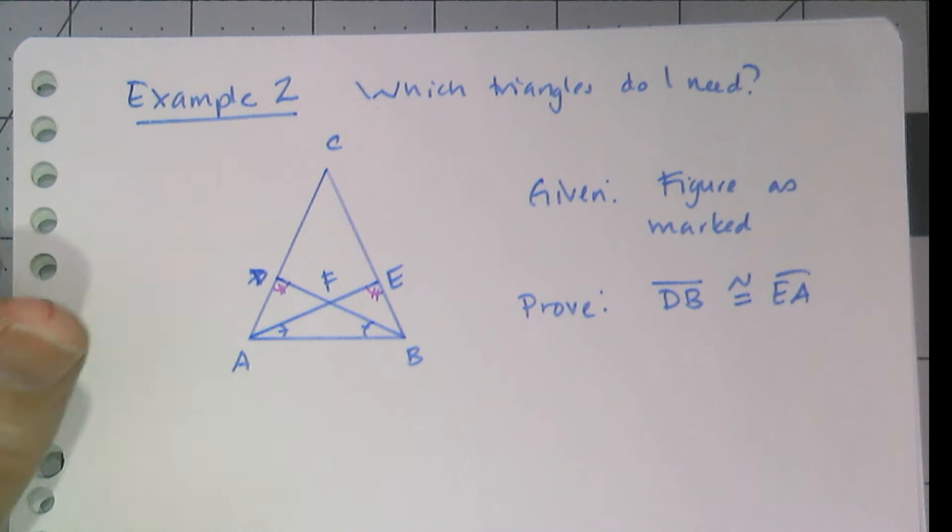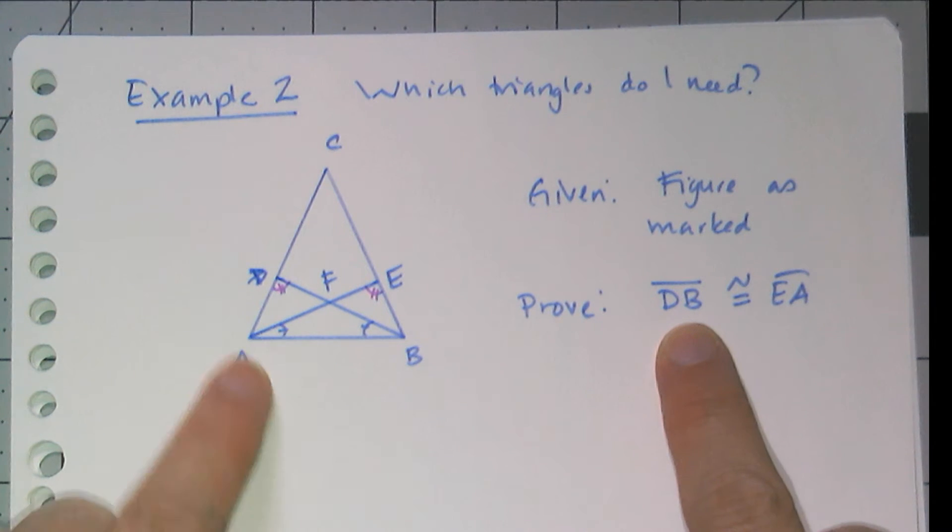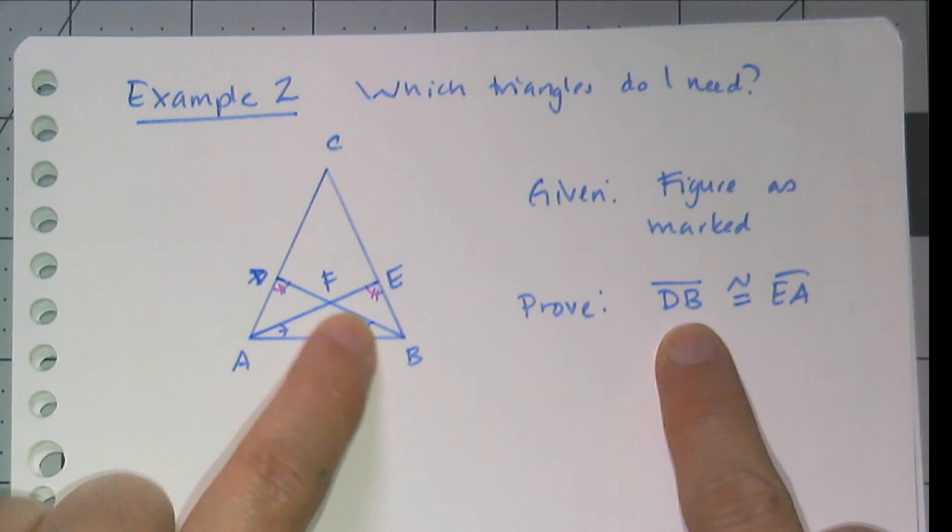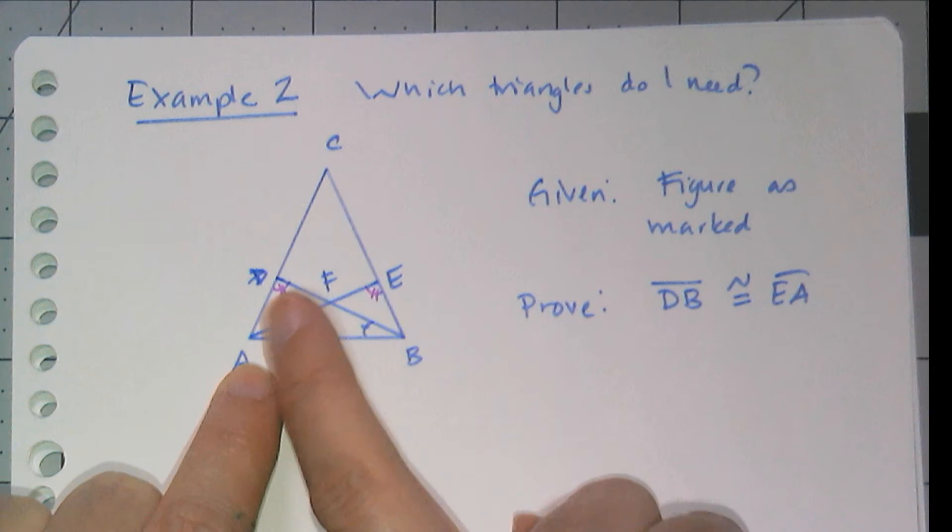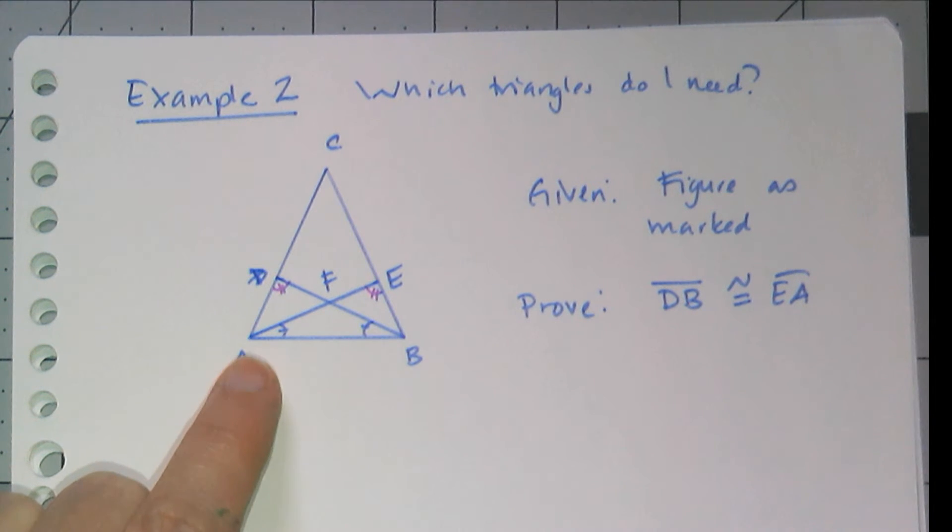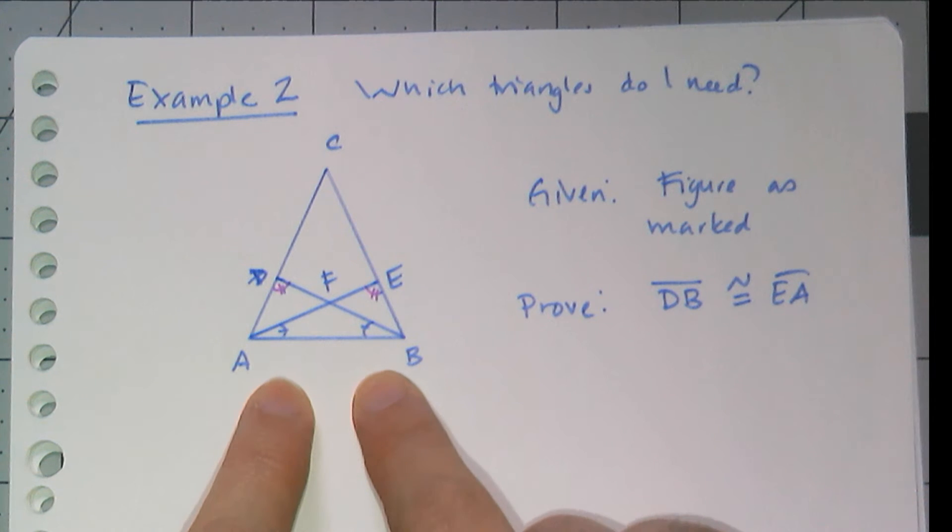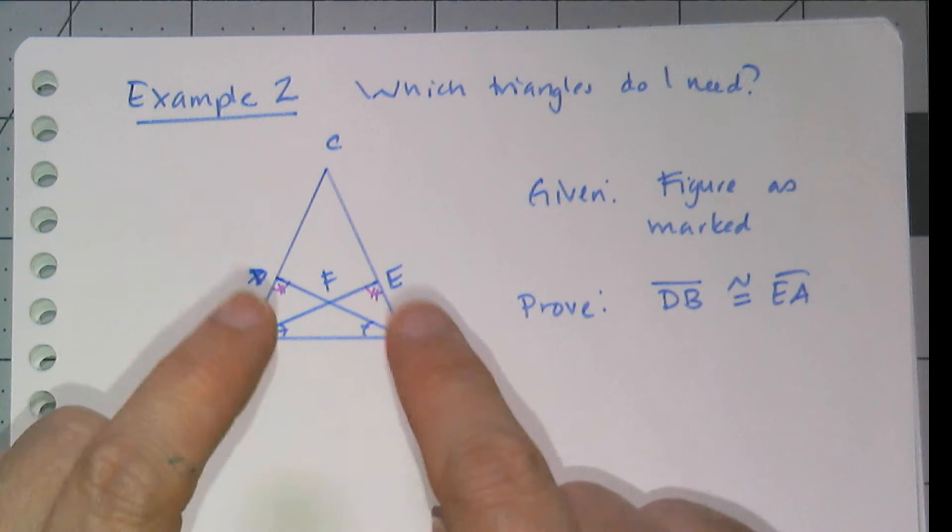And I'm going to show you this with two approaches. Okay, so I'm trying to prove that DB, which is this line segment here, is congruent to EA, which is that segment there. Now geometry student me from long, long ago would just rush into the figure and see what I was given and then see what I could figure out from there.